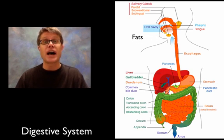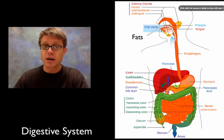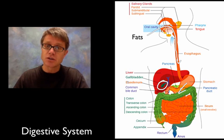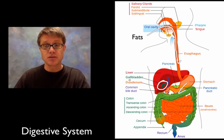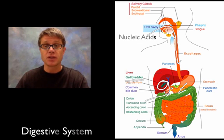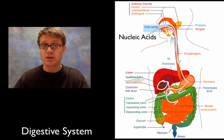For fats, we don't digest much in the mouth, esophagus, or stomach. Instead, we produce bile in the gallbladder, which emulsifies the fat — making them smaller — and then we produce lipases inside the small intestine to break down those lipids. For nucleic acids, we don't do much until the small intestine, where we break them down using nucleases produced in the pancreas.